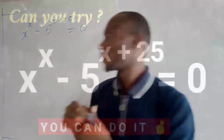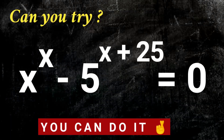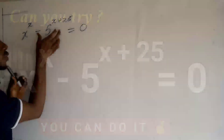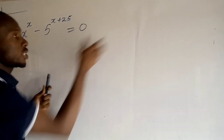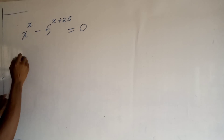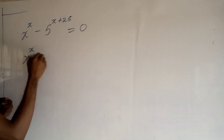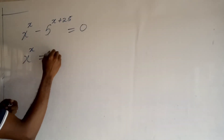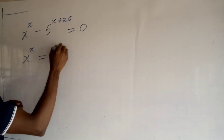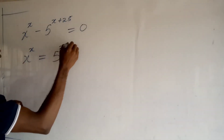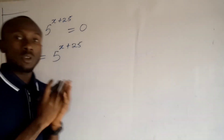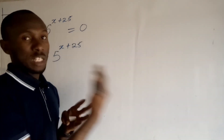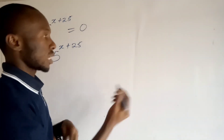The first thing I want to do is to write out the first set of the equation. I have x to the power x is equal to 5 to the power x plus 25.